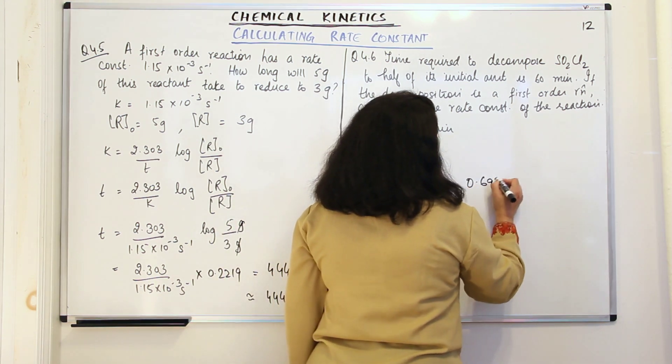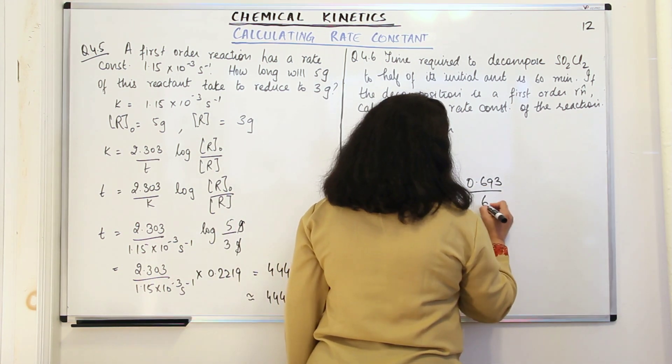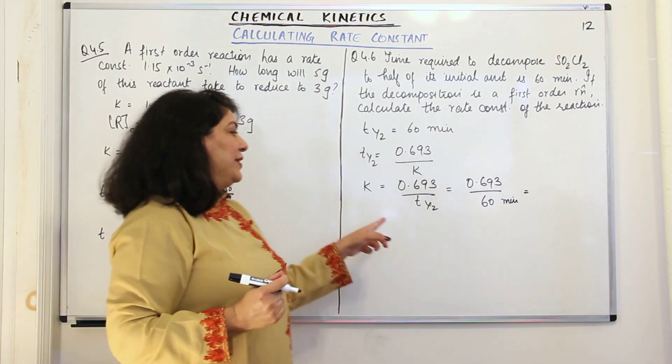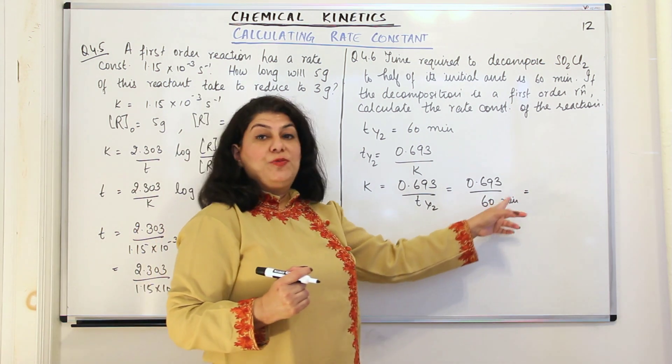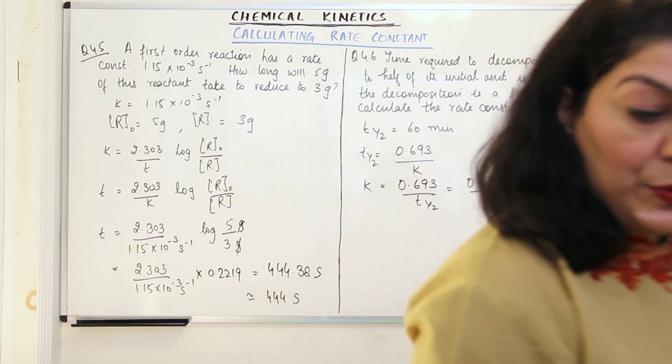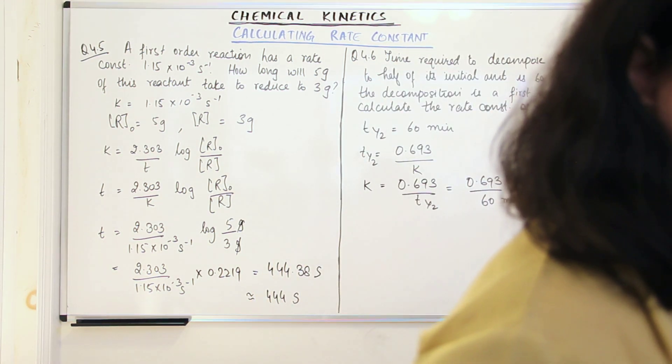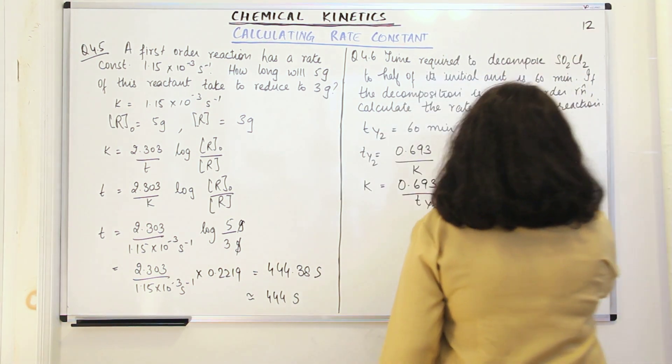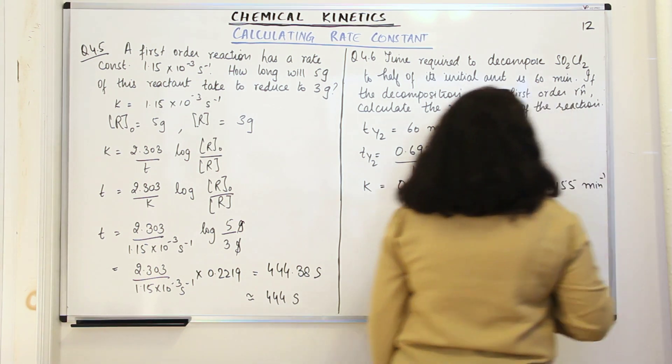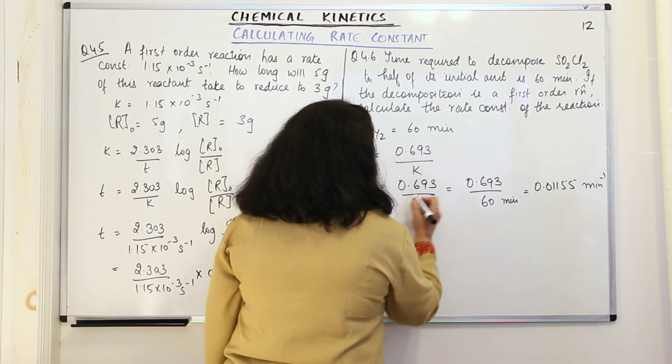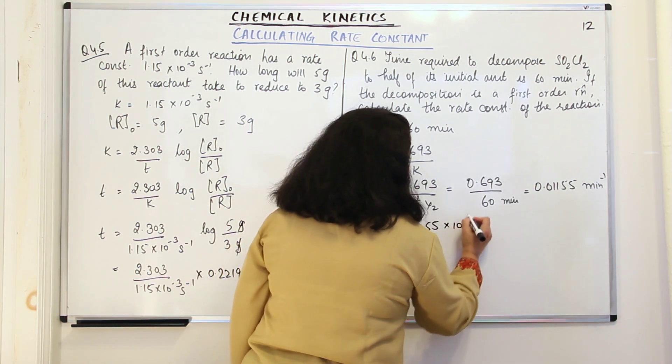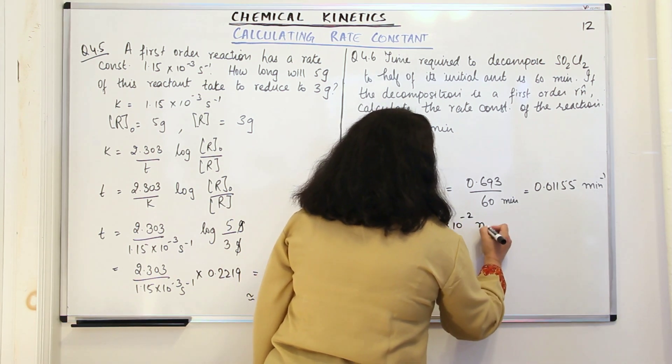So 0.693 upon 60 minutes. What would the unit of this be? The unit of K would be minute inverse because minute is in the denominator. Numerically, when you solve this, this comes out to be equal to 0.01155 per minute, or if you want it in standard form, this could be written as 1.155 into 10 to the power minus 2 per minute.